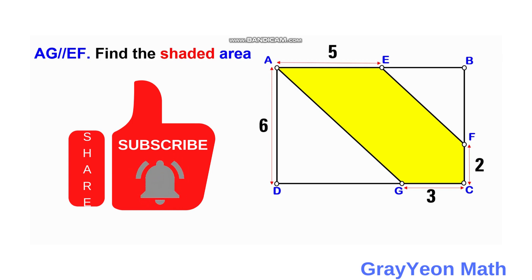Welcome to GrayeonMath. We are asked to solve this problem. We have a rectangle and inside this rectangle are two parallel lines A, G and E, F. From these two segments and with the side portion of this right side F, C and G, C form the shaded part. We are required to find the area of the shaded area.